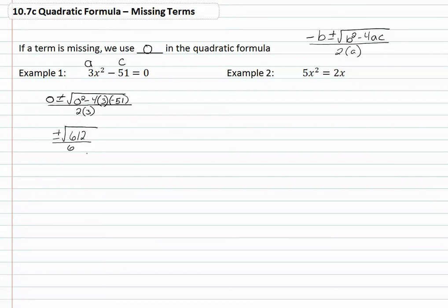Because 612 does not have a perfect root, we're going to leave our answer like this. In a later unit, you will learn how to simplify the radical. At this point, we will just leave our answer just like this.